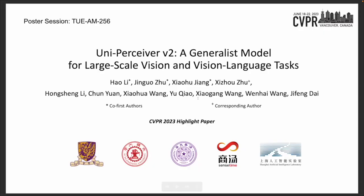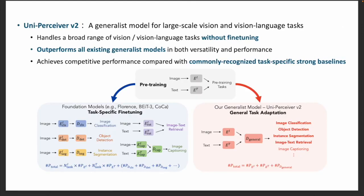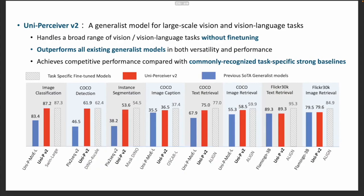Hi everyone, I'm glad to introduce our work, UniPerceiver V2, which is selected as a highlight paper at CVPR 2023. Vision foundation models such as BEiT3 and CoCa have shown great potential for solving different tasks with a general model. However, they still need fine-tuning to be adapted to a specific task, which is costly. Different from foundation models, UniPerceiver V2 aims to build a generalist model which handles a broad range of vision and language tasks with exactly the same model and weights, without any fine-tuning. Compared with all existing generalist models, UniPerceiver V2 supports more tasks and achieves much better performance, and achieves competitive performance compared with task-specific fine-tuned models such as SWIN-Large and DINO, with exactly the same model and weights.